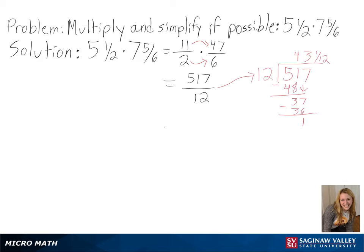Next, we can use long division to convert back into a mixed number and get 43 and 1/12 as our final answer.